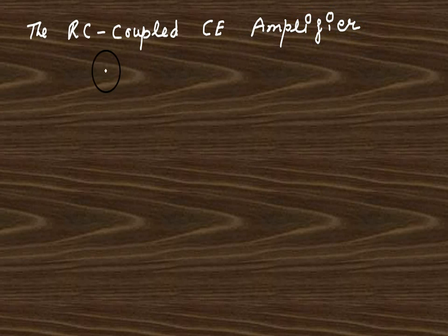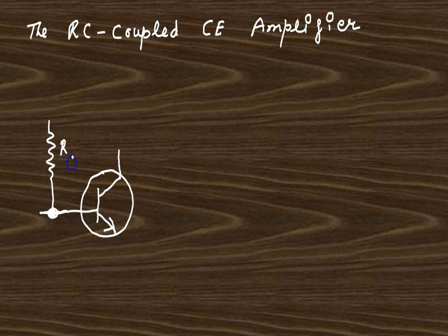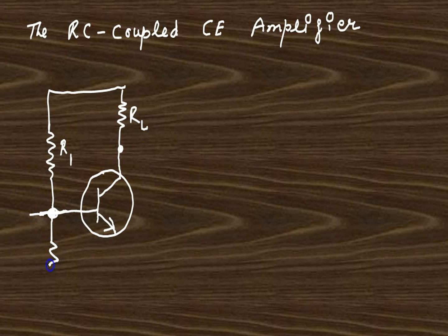Today I will discuss RC Coupled Common Emitter Amplifier — two common emitter amplifier stages coupled by resistance and capacitance. This is the first transistor NPN, and there are four resistors used for biasing: R1, RL, R2, and RE.